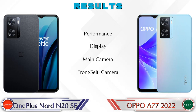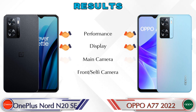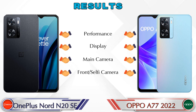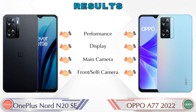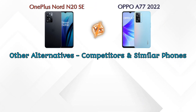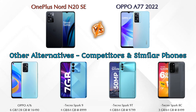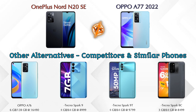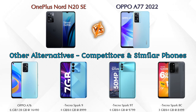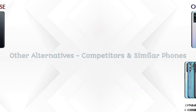In terms of results: in performance both phones are the same, in display both phones are the same, in main camera both phones are the same, and in front selfie camera both phones are the same. For other competitors at the same price, the first is the Oppo A76, second is the Tecno Spark 9, third is the Tecno Spark 9 Pro, and the last is the Tecno Spark 9T. Details about all these competitor phones are available in the description.